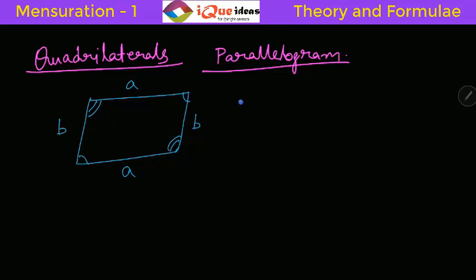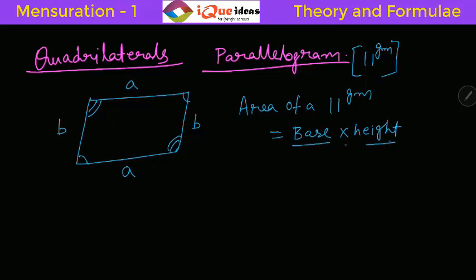The first thing that we need to know is the area of Parallelogram. Parallelogram in short is also written as two parallel lines with a GM written on top. So the area of a Parallelogram can be calculated as Base into Height. You remember the triangle formula was half Base into Height. Parallelogram formula is Base into Height.